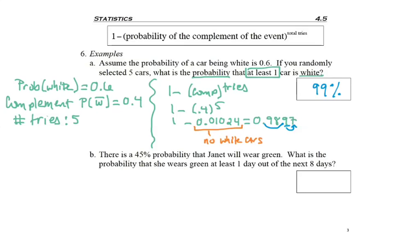There's a 45% probability that Janet will wear green. What is the probability she wears green at least one day out of the next eight? So probability of green at least one day out of the next eight. Now the way some of these are, the ordering of this question is slightly different than the information above, but they both asked for probability. They both had at least one and they gave us this set fixed amount of five cars or eight days.